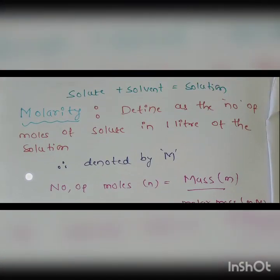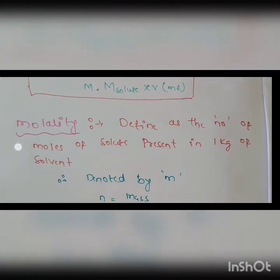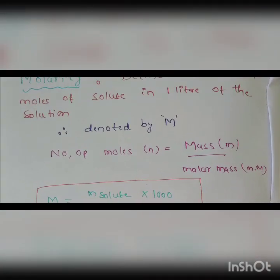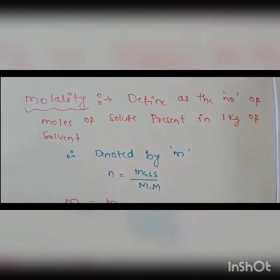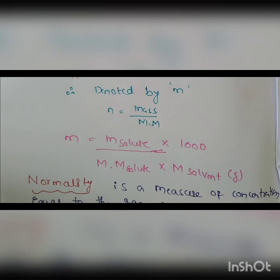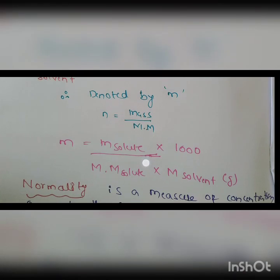The second concept is molality. Molality is defined as the number of moles of solute present in 1 kg of solvent. Note: molarity refers to 1 liter of solution, while molality refers to 1 kg of solvent. Molality is denoted by small m. The formula is: m = (mass of solute × 1000) / (molar mass of solute × mass of solvent in grams).